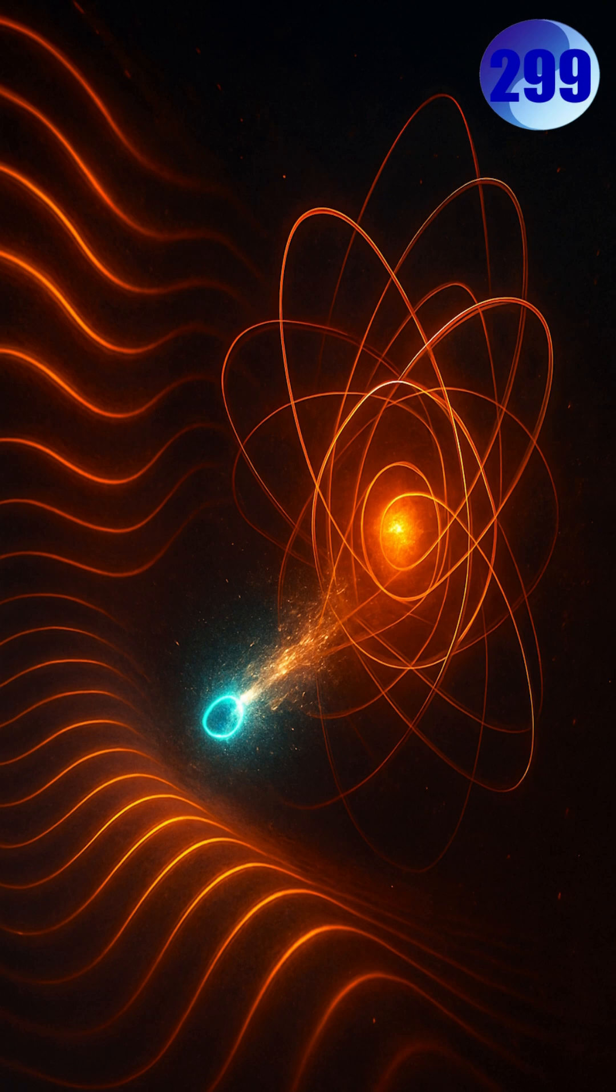When the frequency of incoming light matches the electron's sync threshold, the system destabilizes. The electron pops out, not from impact, but from desync.